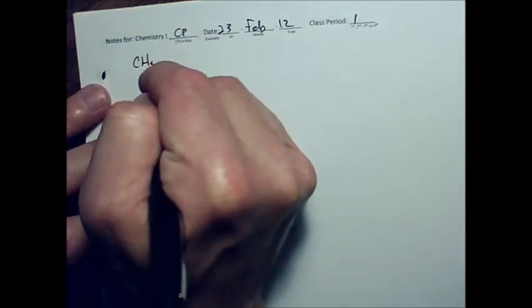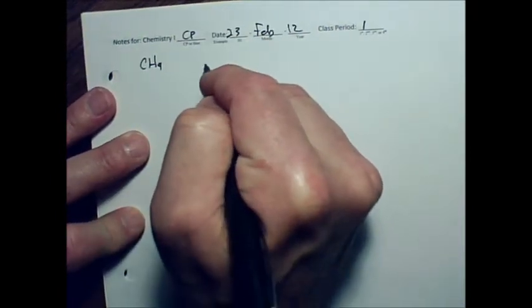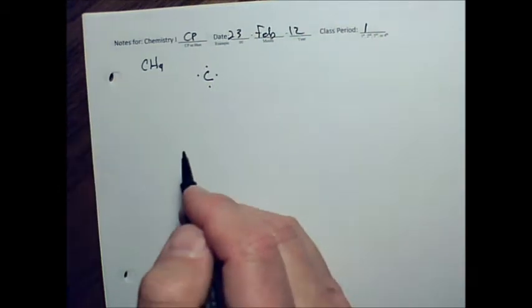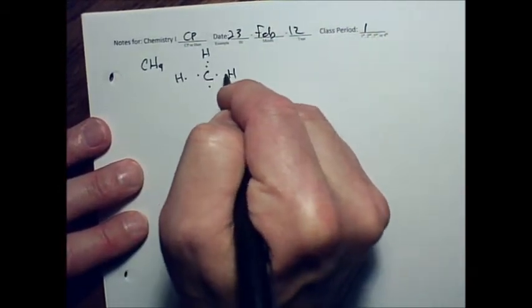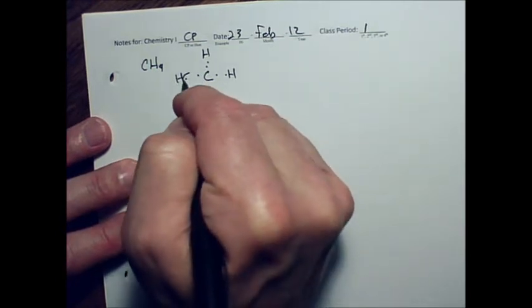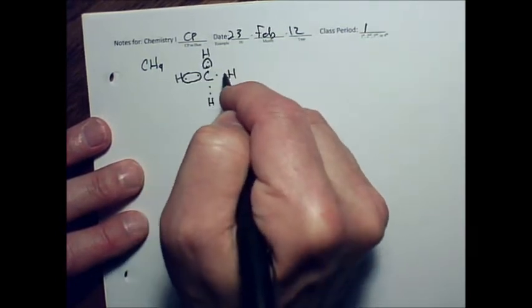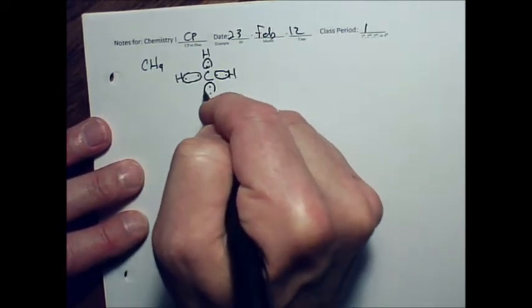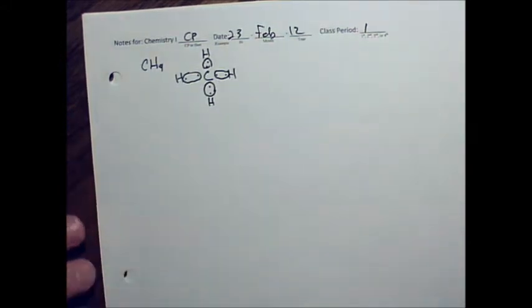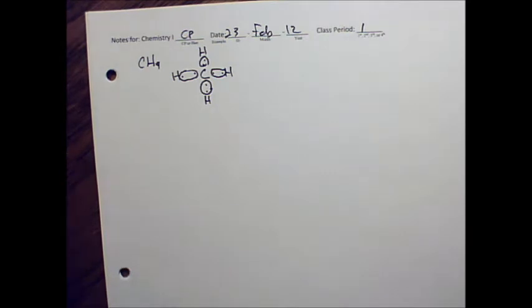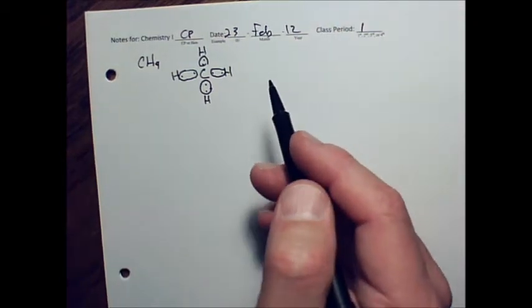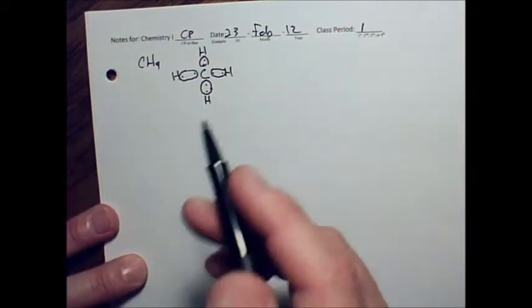So CH4, we've got a carbon with four dots, or four valence electrons, hydrogen with one. We're trying to get enough electrons for each of these atoms so they're as stable as they can be. Hydrogen needs two, carbon needs eight, and sharing electrons in this way allows them to have the most stable form that we can get to.